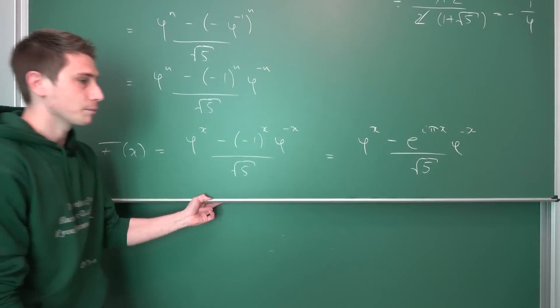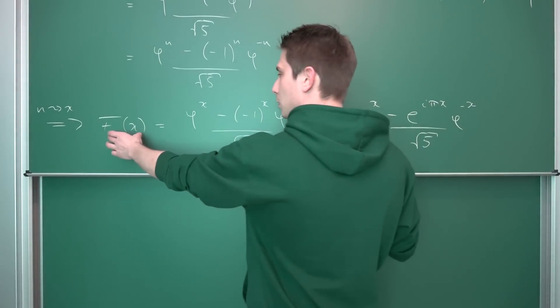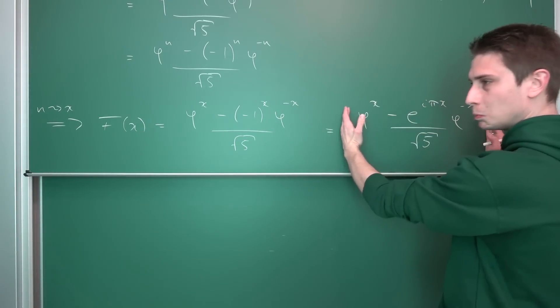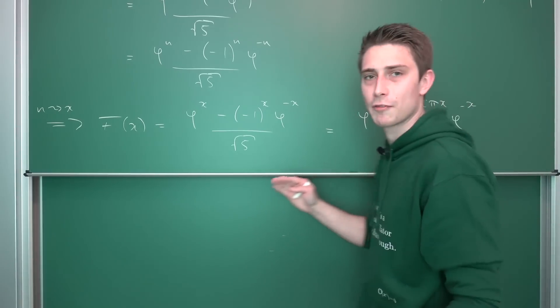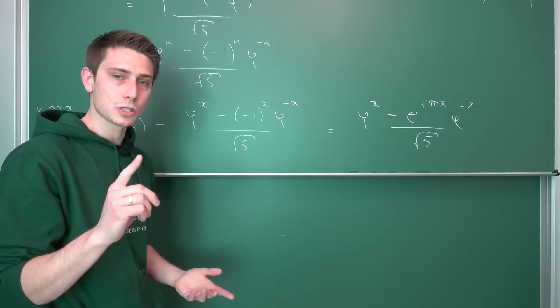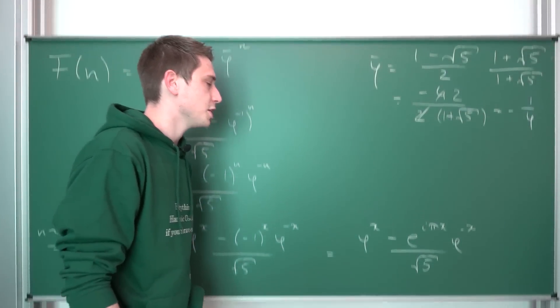Hmm, if we were to plug in 1 half, then we would end up with a complex number as our Fibonacci number, the 1 half Fibonacci number. I mean, it's something that could work out, but I would like to make use of one more property of our Fibonacci numbers.